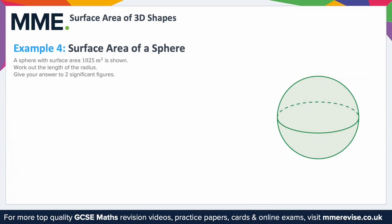Example 4: surface area of a sphere. A sphere with surface area 1,025 metres squared is shown — work out the length of the radius, giving your answer to two significant figures. This is a little bit tricky because we're working backwards. The formula for the surface area of a sphere is 4πr². We already know the surface area, so we set 4πr² equal to 1,025.